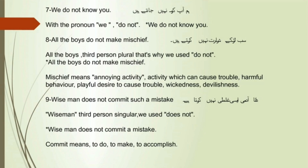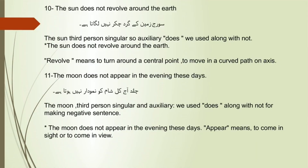Commit means to do, to make, to accomplish. Sentence 10: The sun does not revolve around the earth. 'The sun' is third person singular, so the auxiliary 'does' is used along with 'not' — we can also call it the negative auxiliary. The sun does not revolve around the earth. Revolve means to turn around a central point, or to move in a curved path on an axis.